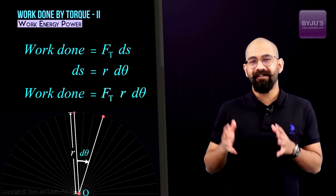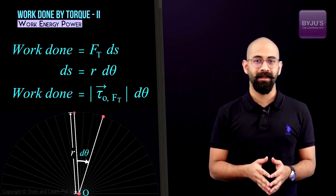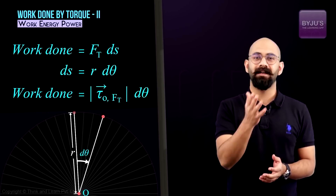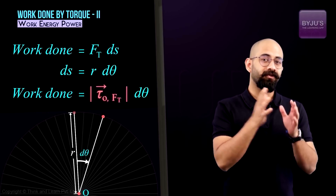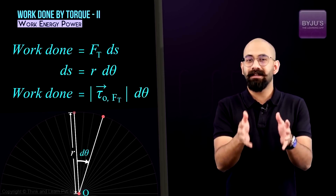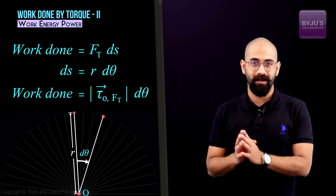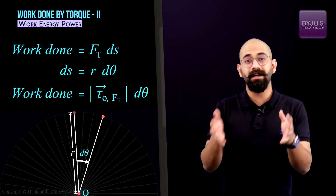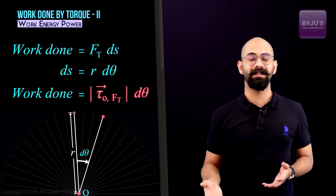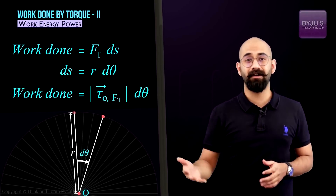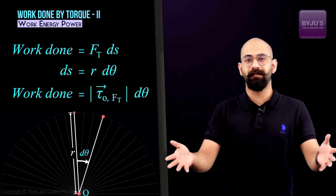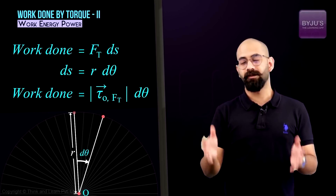Ft times r is nothing but the torque produced by this force about the center. So replacing that, we get work done equals torque times dθ. This fits perfectly with our model of replacing translational quantities with rotational analogs: in translational mechanics, work is F·ds; similarly here, work done by torque is τ·dθ, because torque is the rotational analog of force and dθ is the rotational analog of displacement.